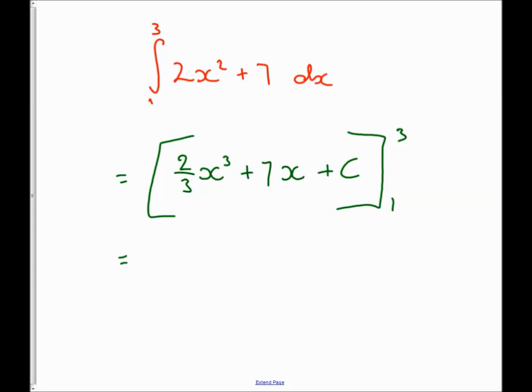Now I just substitute in my limits. So I get 2/3 x³, well in this case x is going to be 3, so we're going to say 3³ + 7 × 3 + c. Then I'm going to take away what I get when I substitute the 1 in, so I get 2/3 × 1³ + 7 × 1 + c.